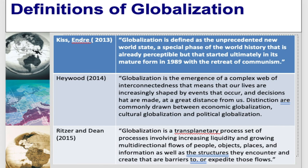Ritzer and Dean in 2015 said globalization is a transplanetary process — a set of processes involving increasing liquidity and growing multidirectional flows of people, objects, places, and information, as well as the structures they encounter and create that are barriers to or expedite those flows.